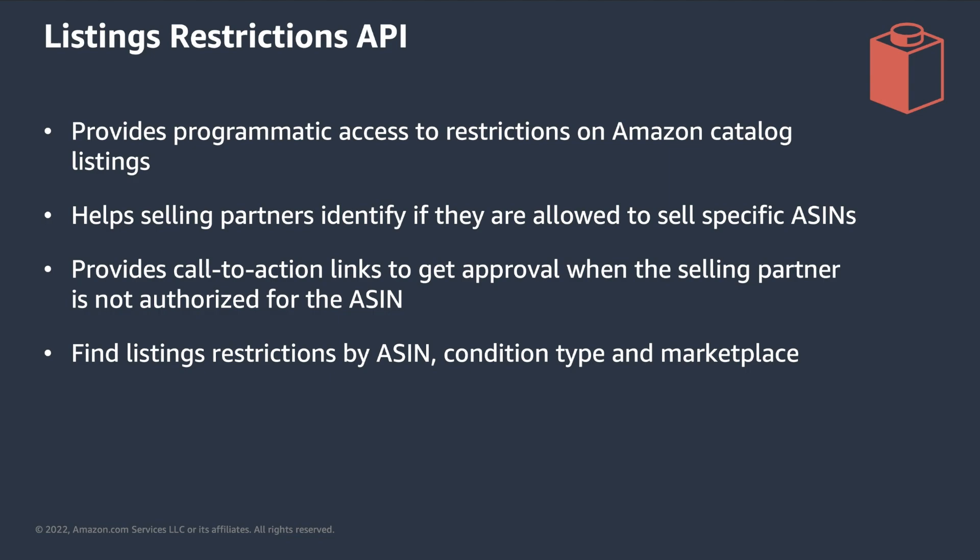The Listings Restrictions API, launched in 2022, provides programmatic access to restrictions on Amazon catalog listings. It's particularly useful to identify if a selling partner is allowed to sell a specific ASIN and to retrieve the steps they need to execute to get approval if they are currently not allowed. Integrating this API before submitting new Listings Items helps prevent issues associated with permissions.